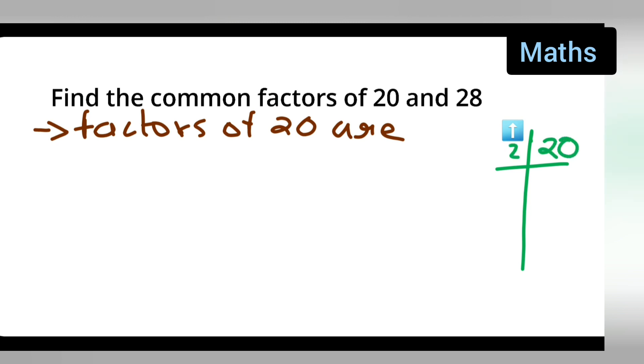20, 2 tens are 20, 2 fives are 10, 5 ones are 5. Okay. And 1 one is 1.